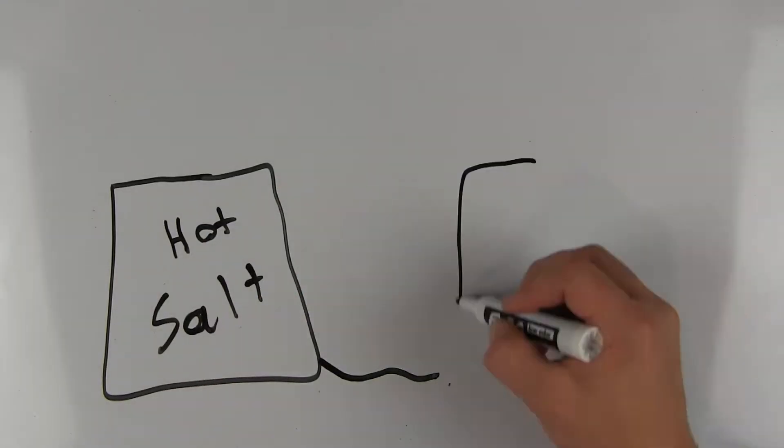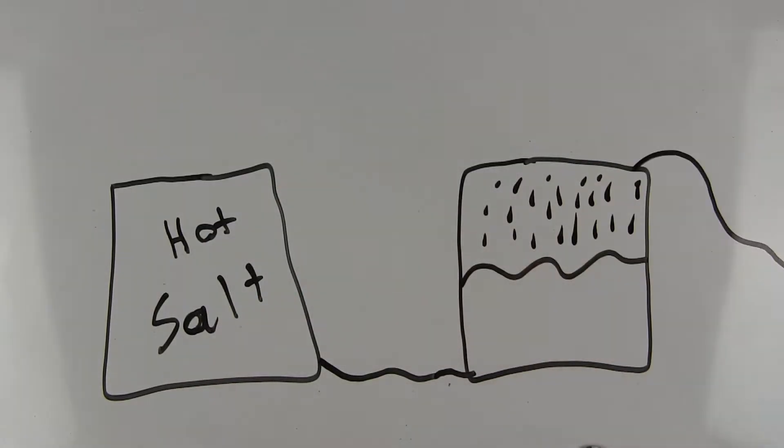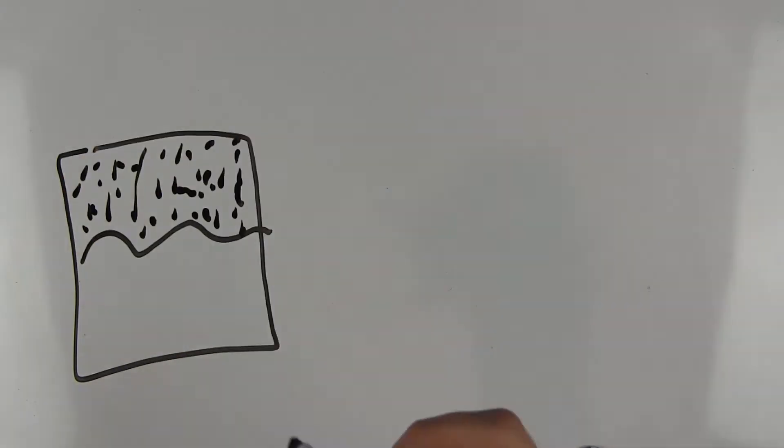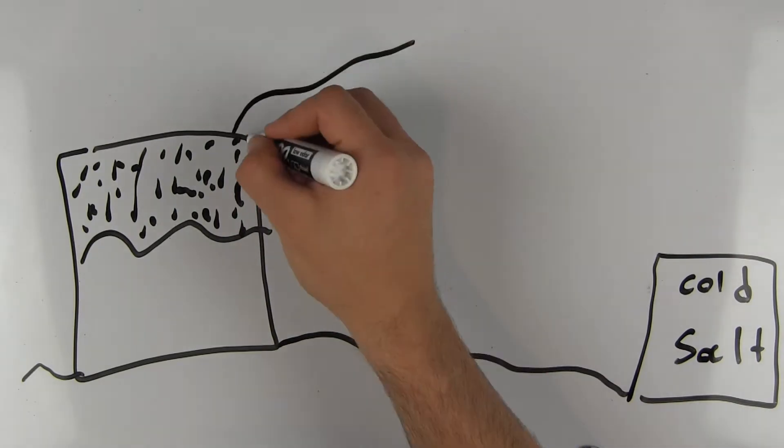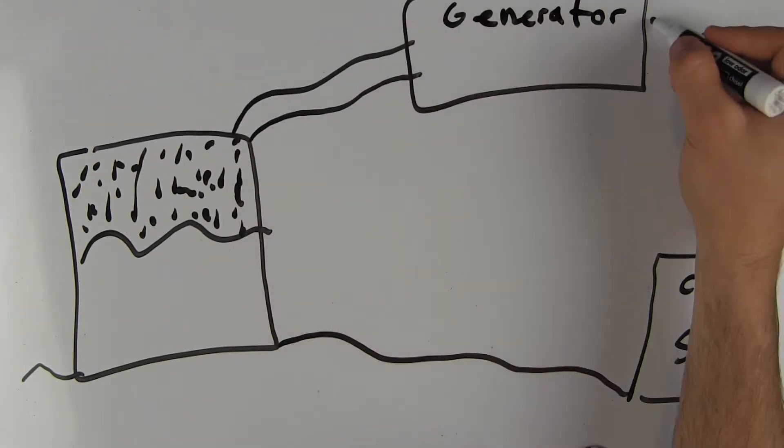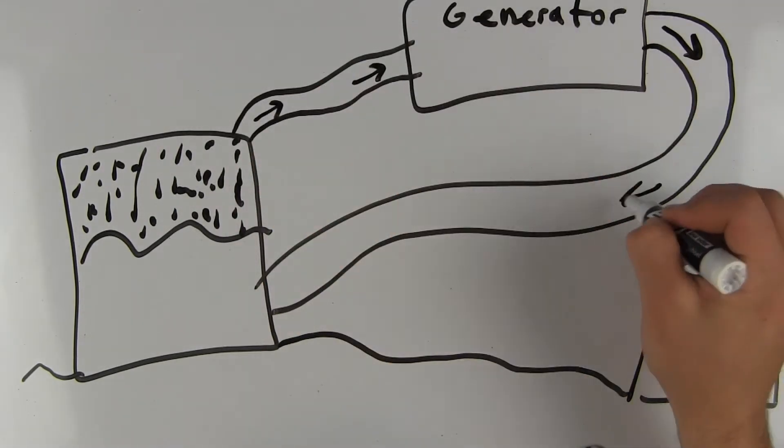The heat from the salt is then used to boil water, which creates steam. The salt, now cooled, goes back to the cold salt tank, and the steam goes to turn a turbine in a generator, which produces energy.